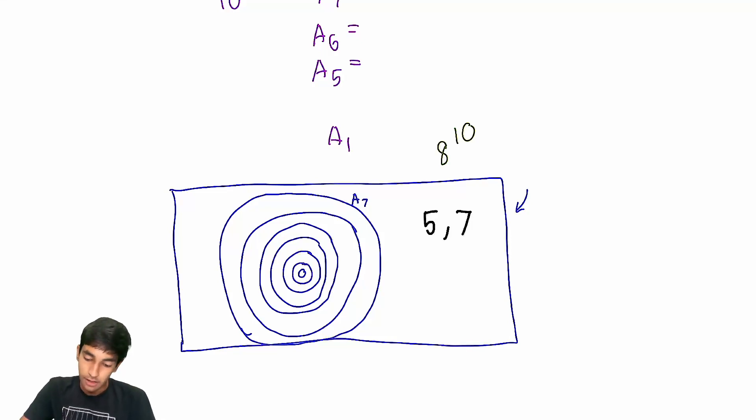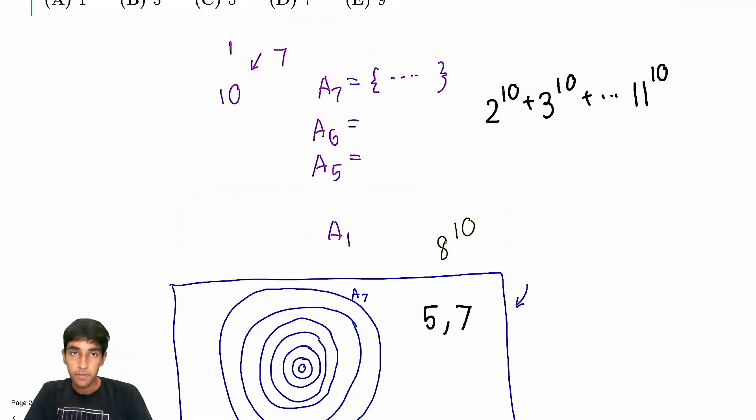So now we just sum for all of these, right? We have 2 to the 10, plus 3 to the 10, all the way until 11 to the 10. And we're trying to find the units digit of this. How should we do this? Well, the simplest way is to find the value of this mod 2, and mod 5.